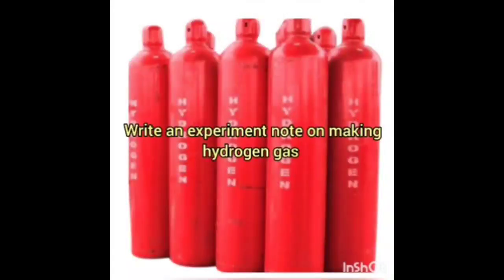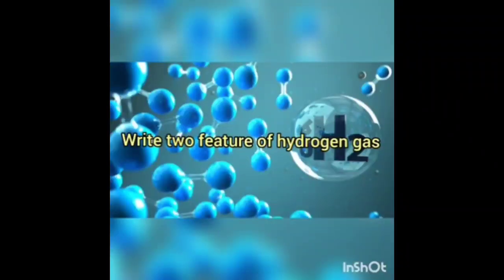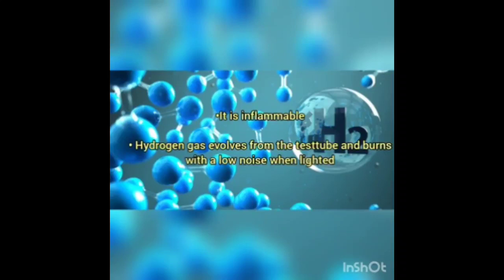Write an experiment note on making hydrogen gas. Take dilute hydrochloric acid in a test tube and add zinc into it. Hydrogen gas is produced. Write two features of hydrogen gas: it is inflammable, and hydrogen gas evolves from the test tube and burns with a low noise when lighted.